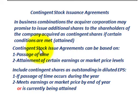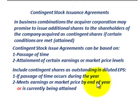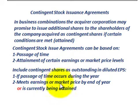Contingent stock issuance agreements can be based on two different items: either the passage of time, or the attainment of certain earnings or market price levels. You would include those contingent shares as outstanding in the diluted earnings per share either if the passage of time occurs during the year, or if you meet the earnings or market price by the end of the year, or if those earnings or market prices are currently being attained earlier in the year.